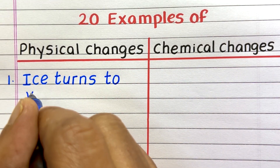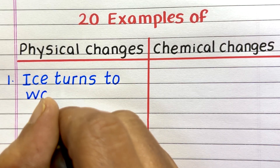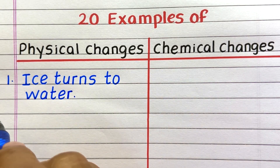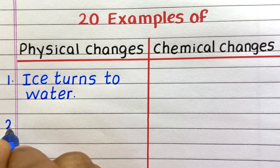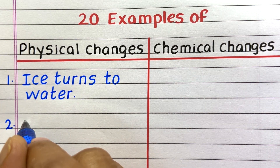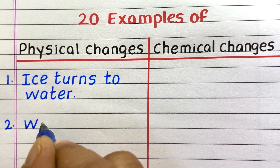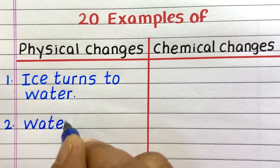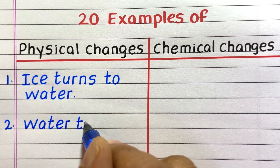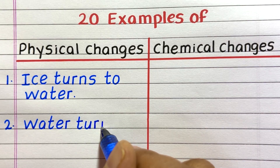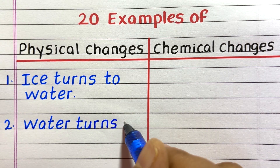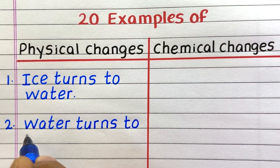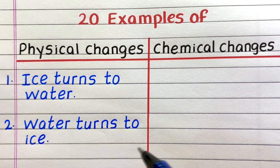First example of a physical change is ice turns to water. Second, water turns to ice.